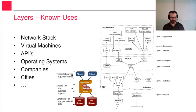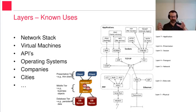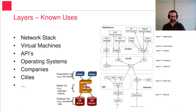Then APIs, operating systems, also companies and even cities you can think of as layers patterns. Inside cities you have houses; inside houses you have flats or rooms; inside rooms you have furniture and so on. So these are all different layers at different abstraction levels — this is also a real-life example of layers.